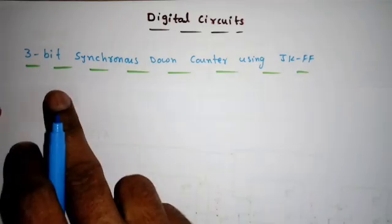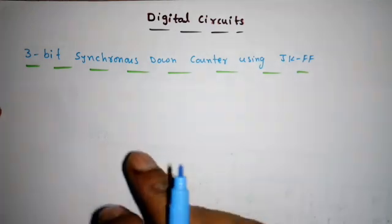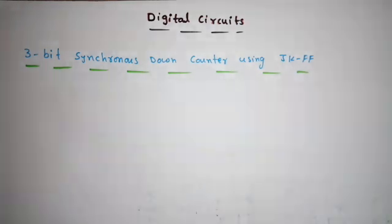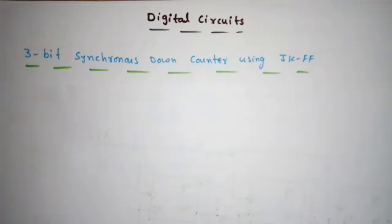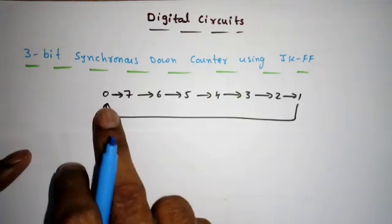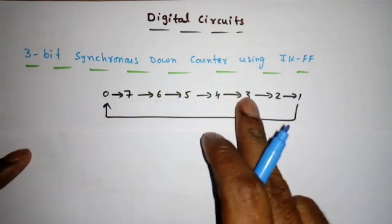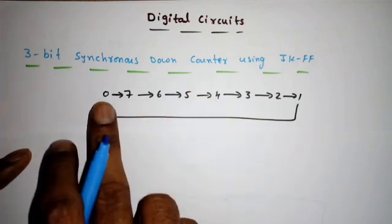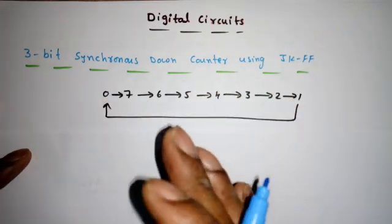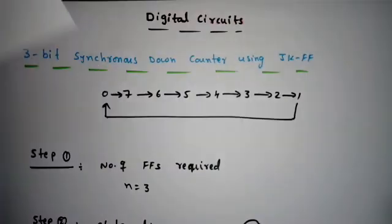In this lecture we will see how to design a 3-bit synchronous down counter using JK flip-flop. In the previous lecture we saw the same counter design using D flip-flop. Down counter means the sequence goes from 0 to 7, then 6, 5, 4, 3, 2, 1, and back to zero again. This is a modulus 8 synchronous down counter.